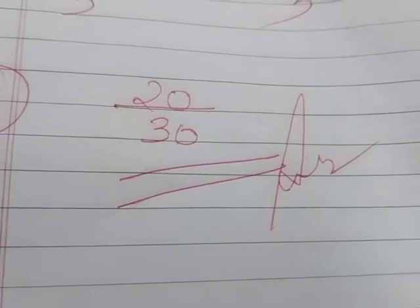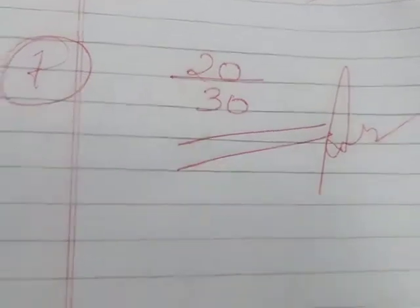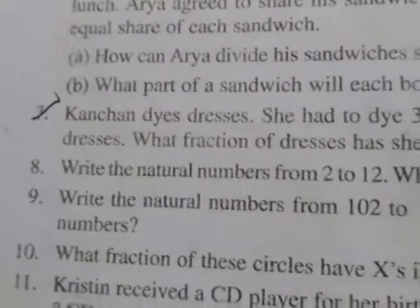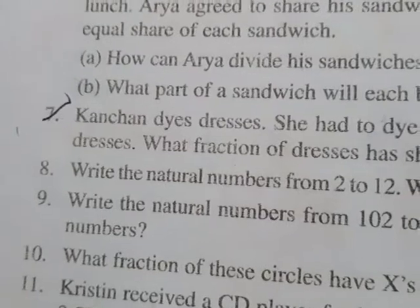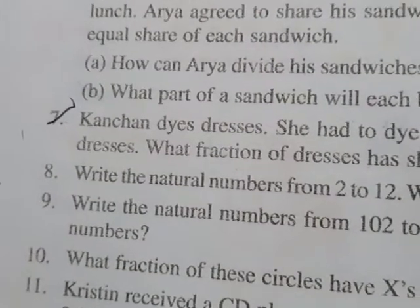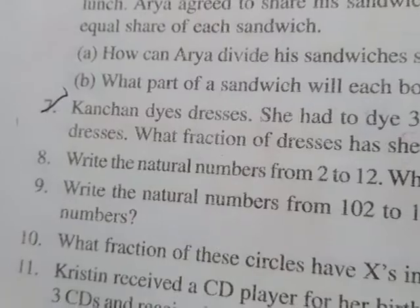Number of dresses she has dyed is 20 by 30. Then the 8th one is write the natural numbers from 2 to 12. What are the natural numbers from 2 to 12? All the numbers from 2 to 12 will come under natural numbers.